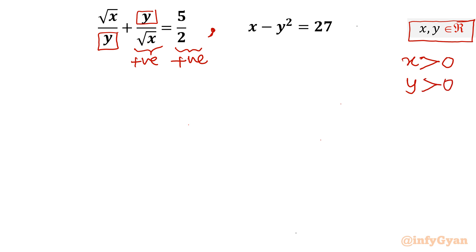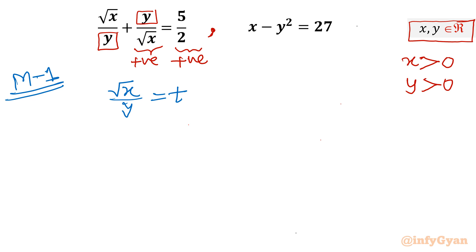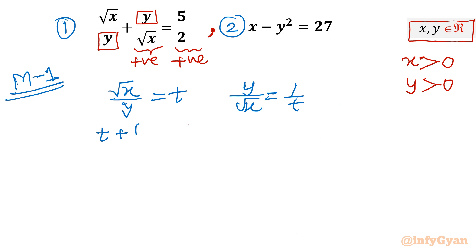I will demonstrate two different methods to solve this problem. Let me begin with Method 1. In this method I will use the substitution: square root of x over y equal to t. Then I can write y over root x equal to 1 over t. So our first equation will become t plus 1 over t equal to 5 over 2.